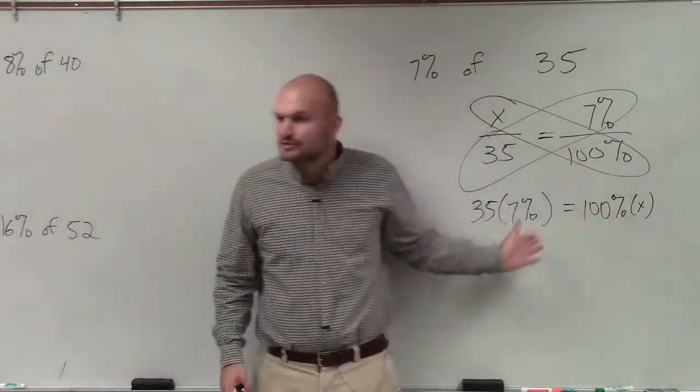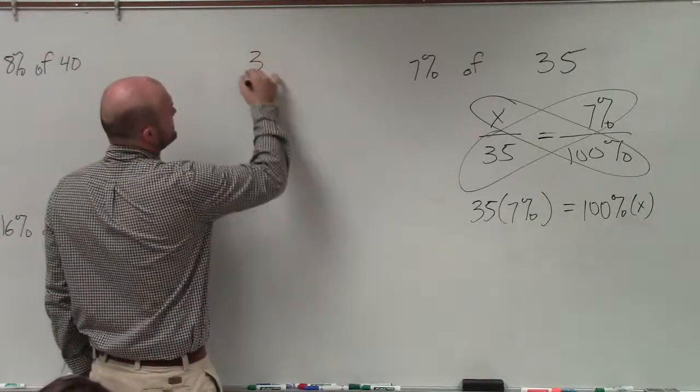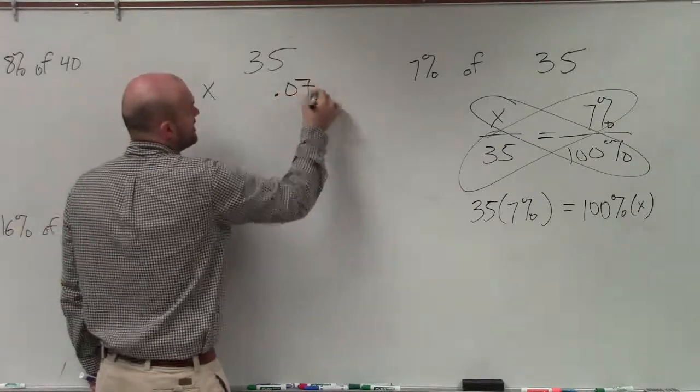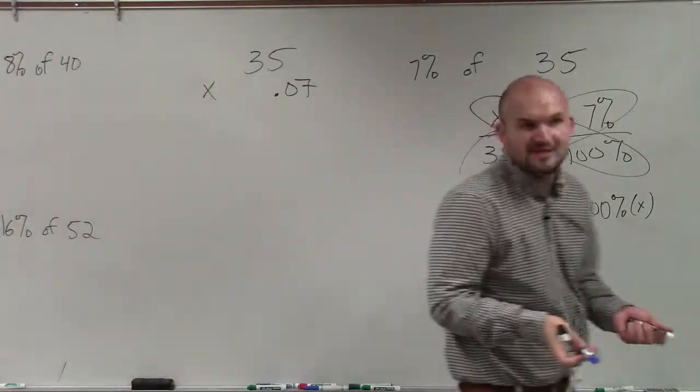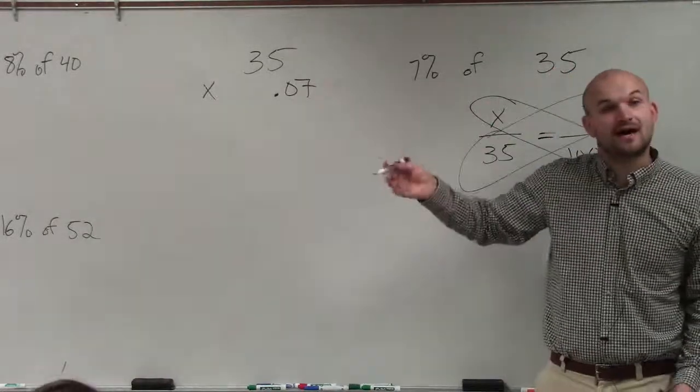So we don't have to go through this. I'm just using this as a teaching tool so you guys can say, oh well, why don't I then set up 35 times 0.07? That's basically what we're doing, is multiplying 35 times 7%.